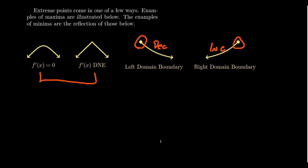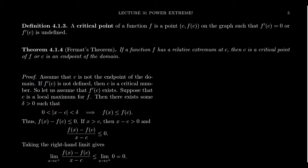This leads us to the definition of a critical point. A critical point of a function is a point (c, f(c)) — with both x and y coordinates — where either the derivative equals zero at that point or the derivative is undefined at that point.